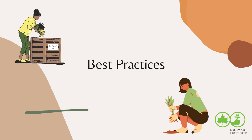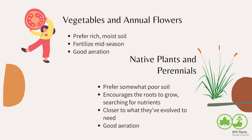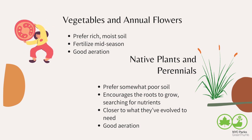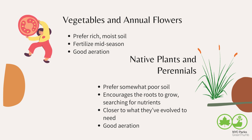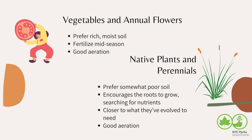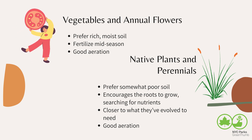Let's take a look at some best practices for soil care. Tailor your soil practices to the plants you plan to grow. Annuals such as vegetables and flowers like zinnias prefer rich, moist soil. You can fertilize mid-season with compost, fish emulsion, or other natural fertilizers. Native plants generally prefer somewhat poorer soil, which encourages the roots to grow searching for nutrients. If the soil is too rich, the roots are likely to remain shallow, making them less resilient in a drought or storm.